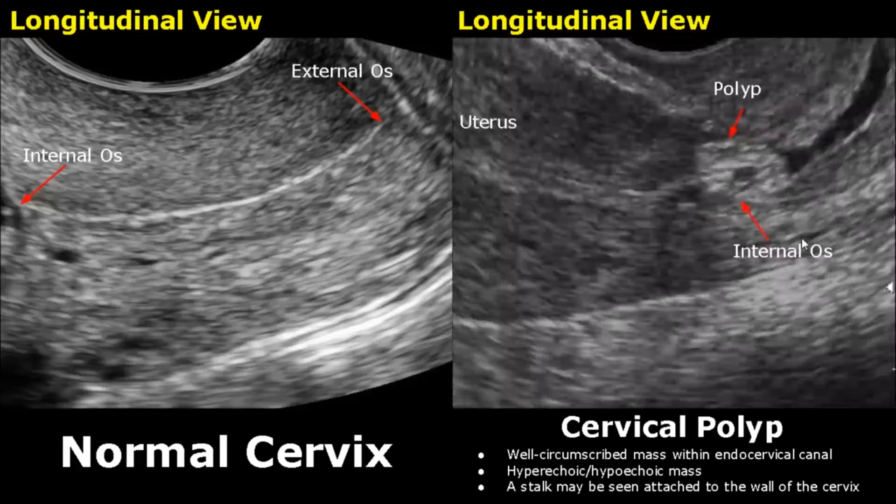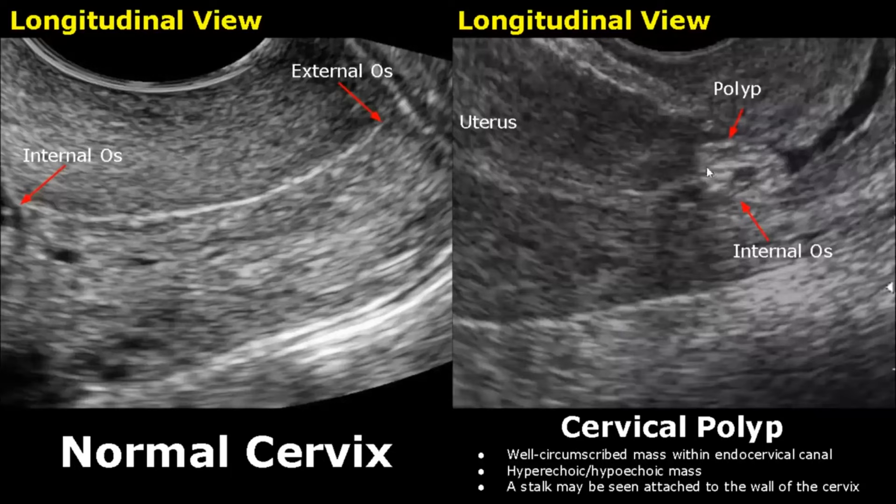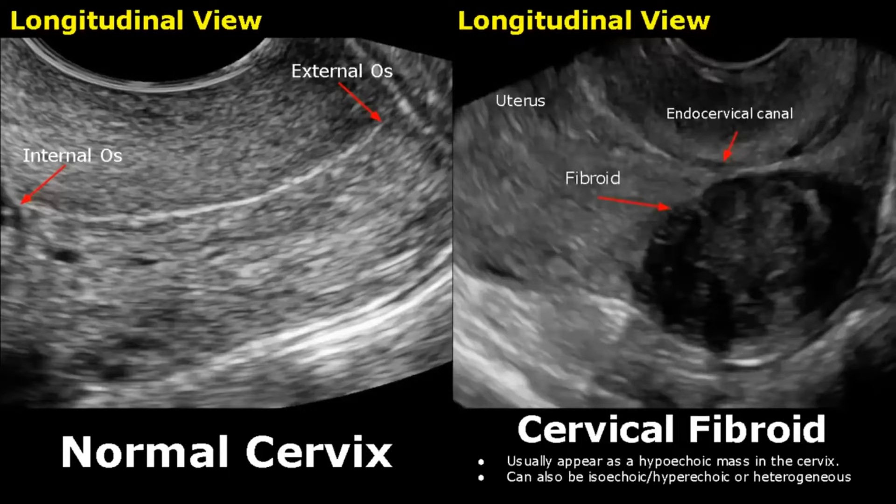This is another case of a cervical polyp — a well-circumscribed round hyperechoic mass in the cervix. A fibroid can also be found in the cervix, appearing mostly hypoechoic but also possibly isoechoic, hyperechoic, or even heterogeneous.